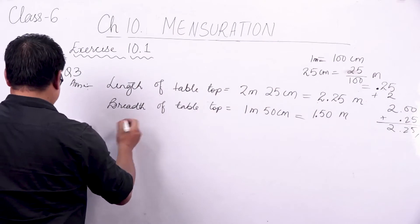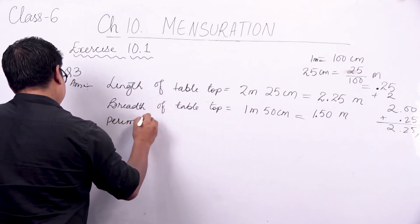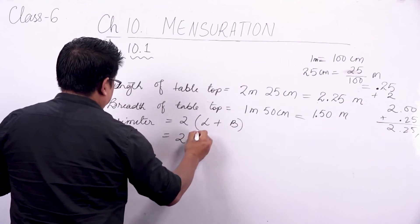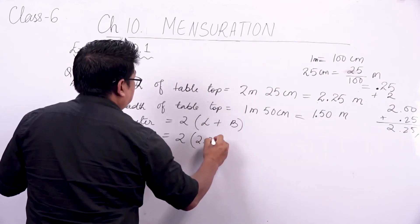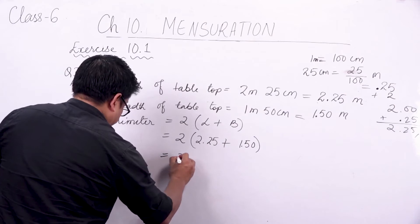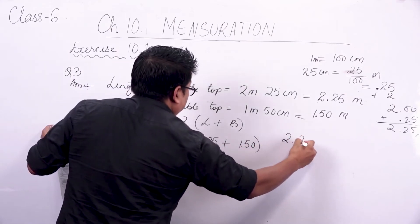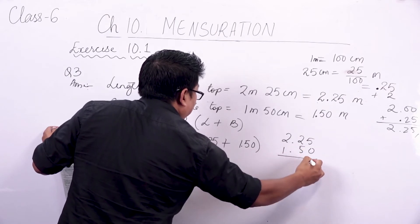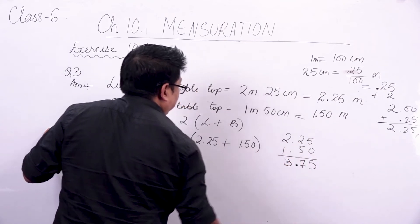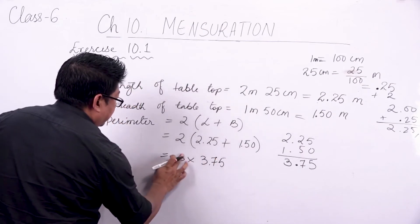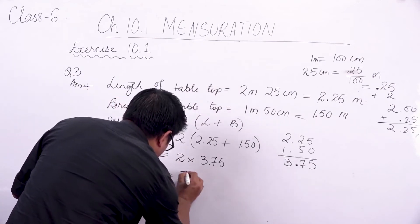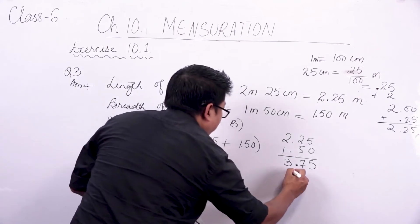So we have all the length and breadth. Perimeter is equal to 2 into (length plus breadth). So 2 into (2.25 plus 1.50). When you add 2.25 and 1.50, you get 3.75. Then 2 into 3.75 gives 7.5 meter.